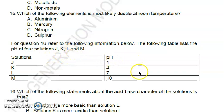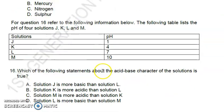Number fifteen: which of the following elements is most likely ductile at room temperature? The answer is letter A, aluminum. For question sixteen, refer to the following information. The table lists the pH of four solutions J, K, L, and M. Which of the following statements about the acid-base character of the solutions is true? The answer is letter B - solution K is more acidic than solution L.